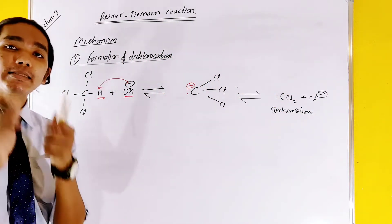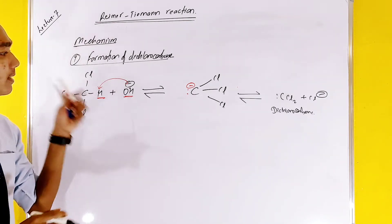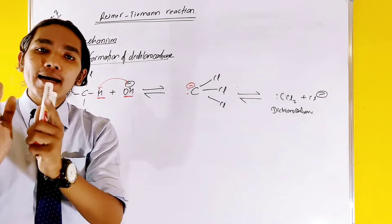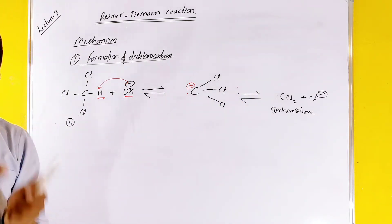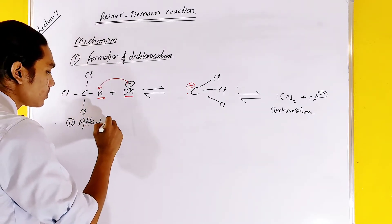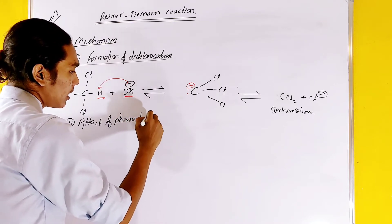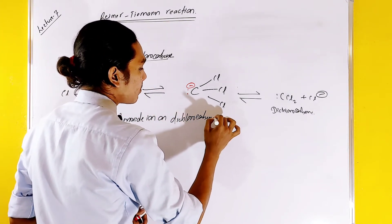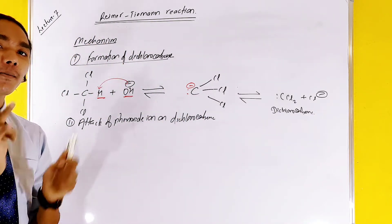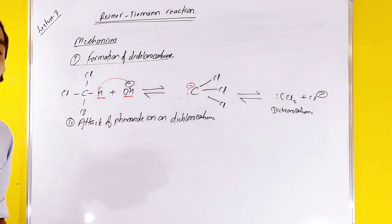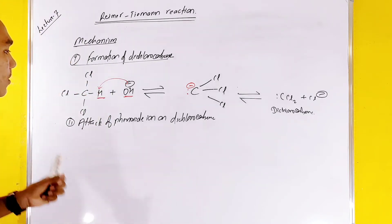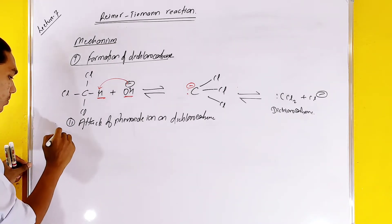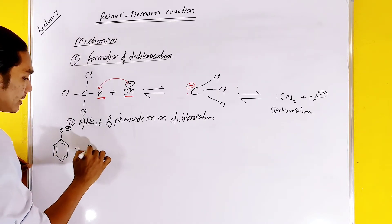The second step is the attack of the phenoxide ion on dichlorocarbene. The phenoxide ion attacks the dichlorocarbene species.